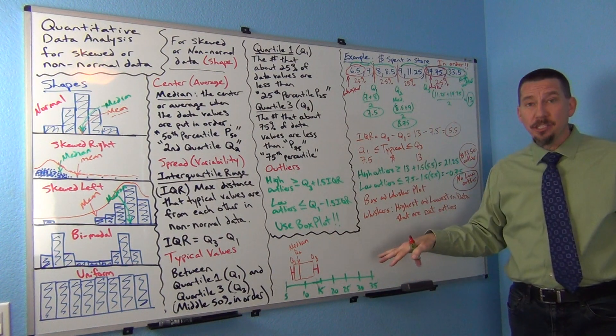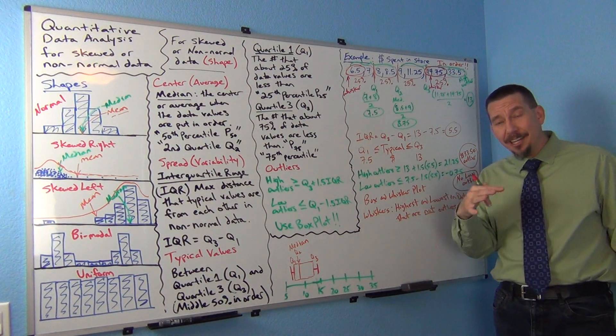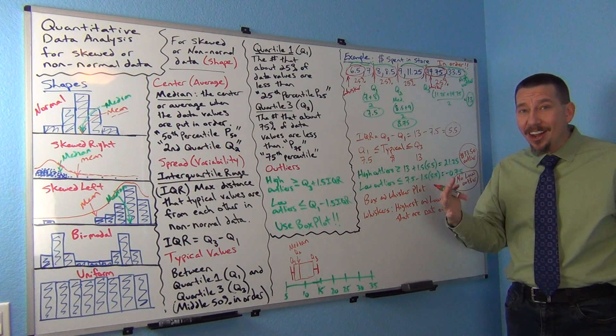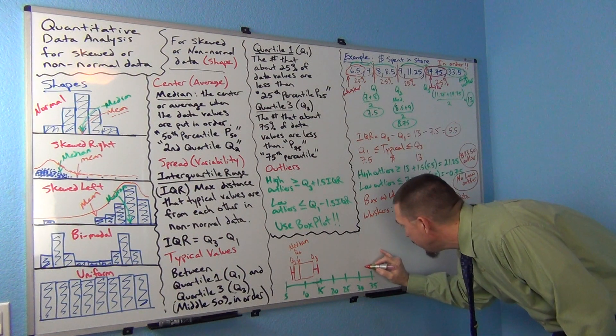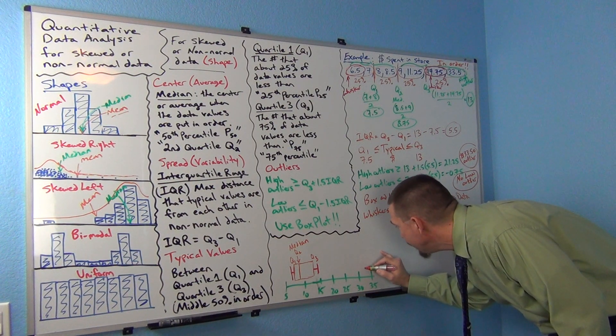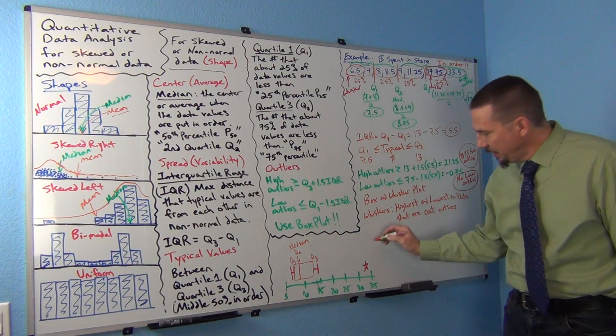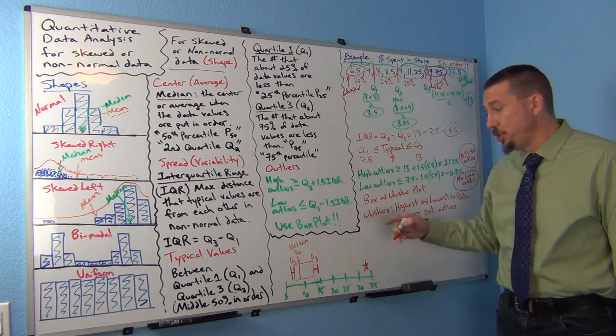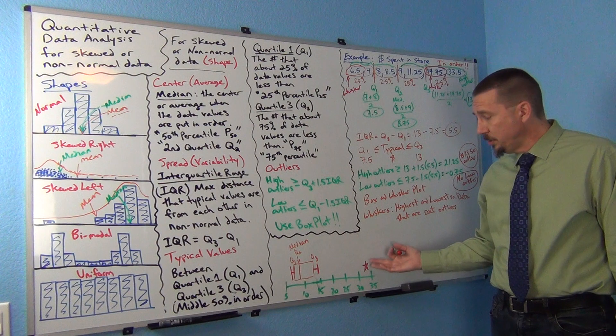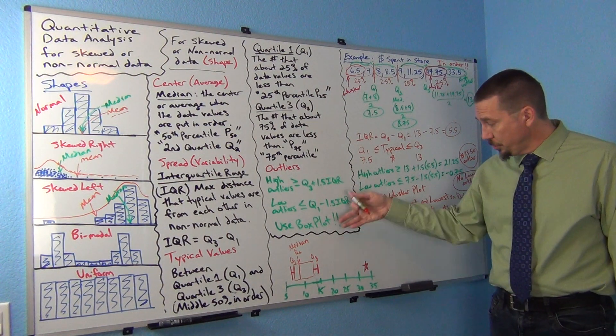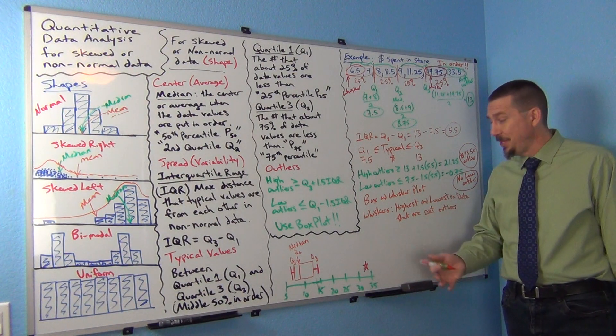Now what about the outlier? The box plot actually shows you outliers. Each computer program uses a different symbol, though. Some computer programs use little circles, some use little triangles, some use little stars. It just depends on the computer program. So 33.5 is a high outlier. So what the computer will do is they'll draw like a little triangle or a little star here at 33.5. So if you see a little star or a little circle or a little triangle, that just means that's an outlier. And what you can do when you make a box plot in the computer, you just hold your cursor on those little stars or little circles and it'll tell you all the outliers. So you could have like 20 outliers and just hold your cursor on each one and the computer will tell you what each of those outliers were. So it's very useful. I like box plots a lot because they actually give you the outliers, which is very nice.